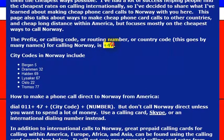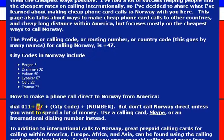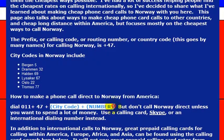So you would want to know the calling code for the country, which is 47. To make a phone call to Norway, you would dial the outbound international dialing code, which is 011. Then you would dial 47 — that's the country code for Norway — and then the phone number you wanted to reach.